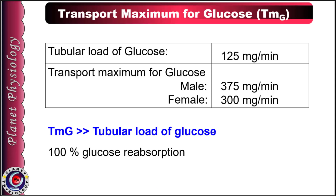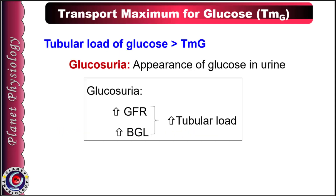TMG is 300 mg per minute in females and 375 mg per minute in males. Whenever tubular load of glucose is greater than TMG, glucose cannot be reabsorbed completely and some glucose starts appearing in the urine, resulting in glycosuria. This can happen whenever there is a rise in GFR, blood glucose level, or both.